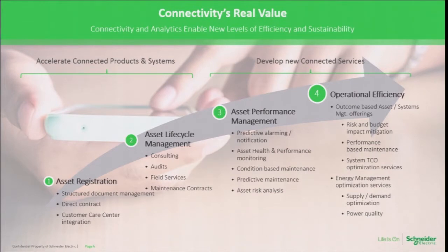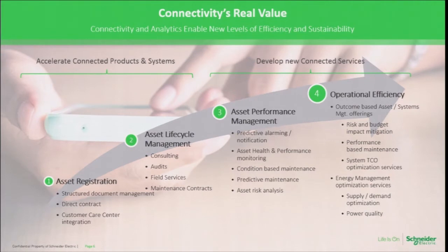And then the fourth step, if you look at it really at the system level, is looking at outcomes. How do you look at the TCO of an entire system? How do you optimize a system? How do you get into energy management optimization services? Looking at demand optimization, working on power quality — things that are possible when you connect a lot of things together and you optimize a system.